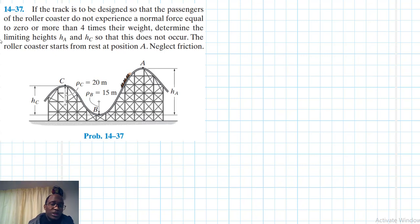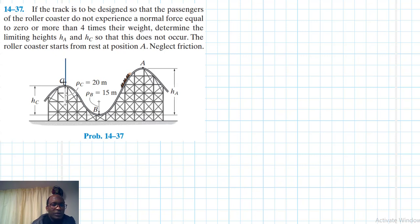This problem is from Engineering Mechanics and Dynamics, 14th edition by R.C. Hibbeler. Let's draw the free body diagram. At each position we have the weight acting downward, and we have the normal forces N_C, N_B, and N_M respectively, with weight W remaining the same throughout.